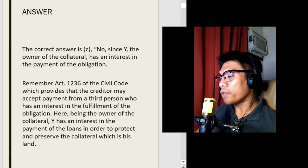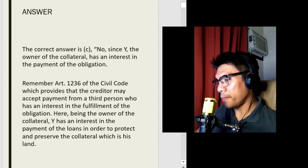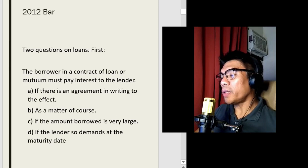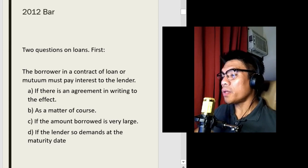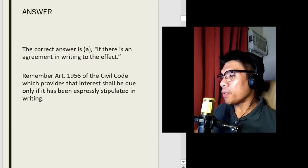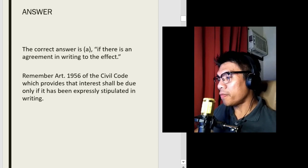Let's now go to the 2012 bar. There were two questions on loans. The first question: the borrower in a contract of loan or mutuum must pay interest to the lender. Choices: A — if there is an agreement in writing to the effect; B — as a matter of course; C — if the amount borrowed is very large; or D — if the lender so demands at the maturity date. The correct answer is A — if there is an agreement in writing to the effect. Remember Article 1956 of the Civil Code, which provides that interest shall be due only if it has been expressly stipulated in writing.